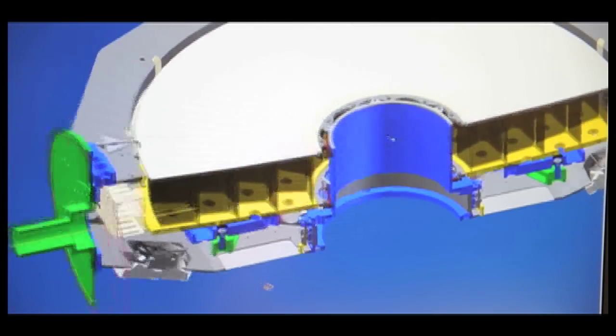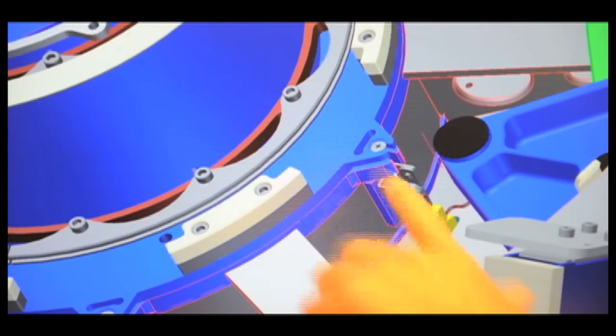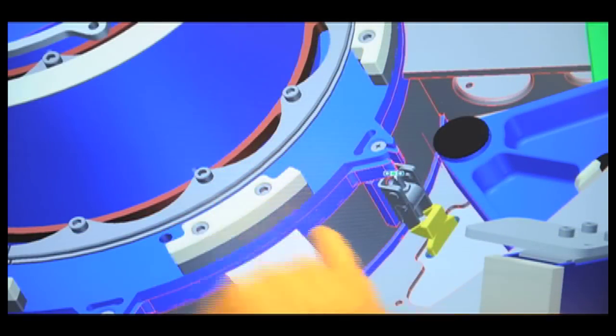That's the cutaway section of the assembly. We have little mirror clips. These actually hold the central hub and mirror onto the mirror cell.